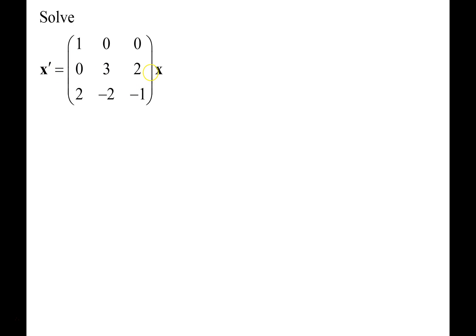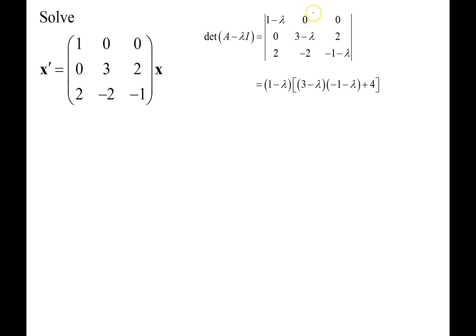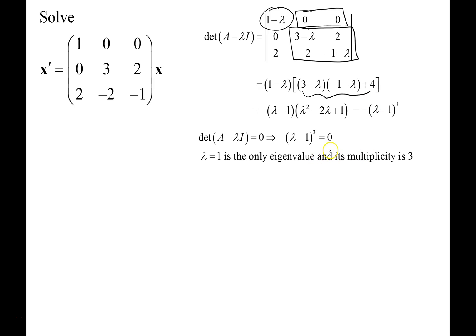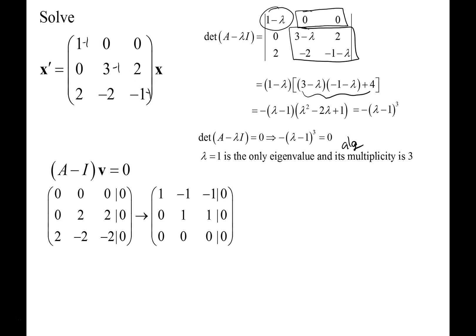Let's see how it works. We have x′ = Ax for this matrix A. When we find the eigenvalue, there are two zeros in the first row so we expand about that. The 1 − λ times the sub-determinant multiplies out to λ² − 2λ + 1, so λ − 1 is an eigenvalue of multiplicity 3 — that's the algebraic multiplicity. To find the eigenvector, we subtract 1 along the diagonal and find the null space. We row reduce to echelon form.